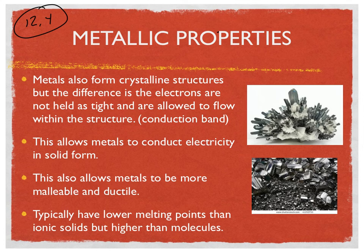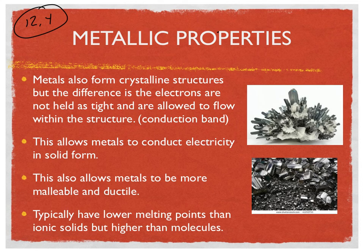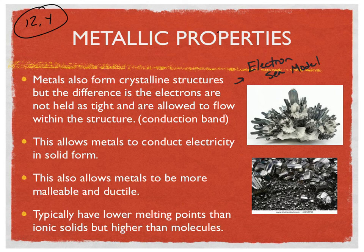Metals behave unlike the other three solids we discussed in a previous video lesson, which is why they have their own conversation. Like ionic substances, covalent network, and molecular substances, they form crystalline structures. But the difference is that the electrons are not held tightly and are allowed to flow within the structure. We refer to this as the Electron Sea model. Because the electrons aren't being held, this allows electrons to flow between the nuclei of a particular metal. When electrons flow, that is the definition of electricity. The electrons are delocalized, meaning they don't belong to any one particular element, but kind of belong to every element there.